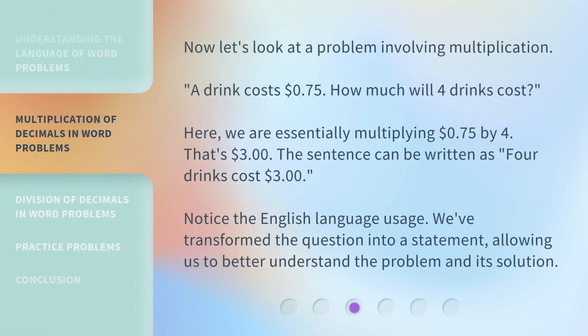Now let's look at a problem involving multiplication. A drink costs 75 cents. How much will four drinks cost? Here, we are essentially multiplying 75 cents by four. That's three dollars. The sentence can be written as: 'Four drinks cost three dollars.'